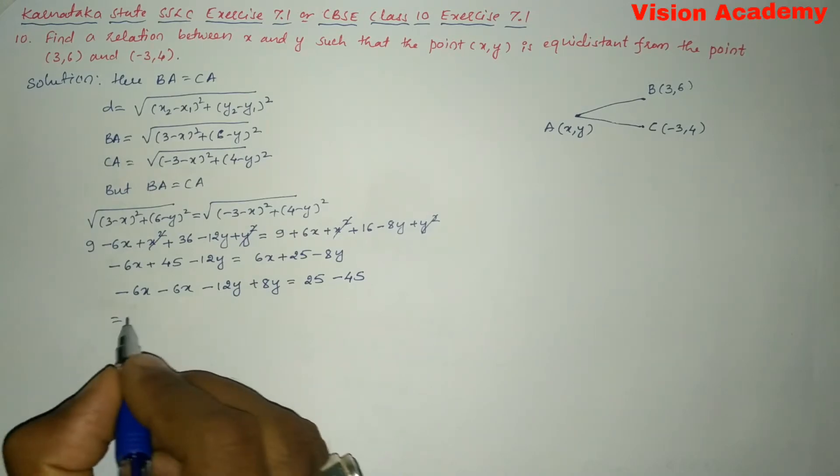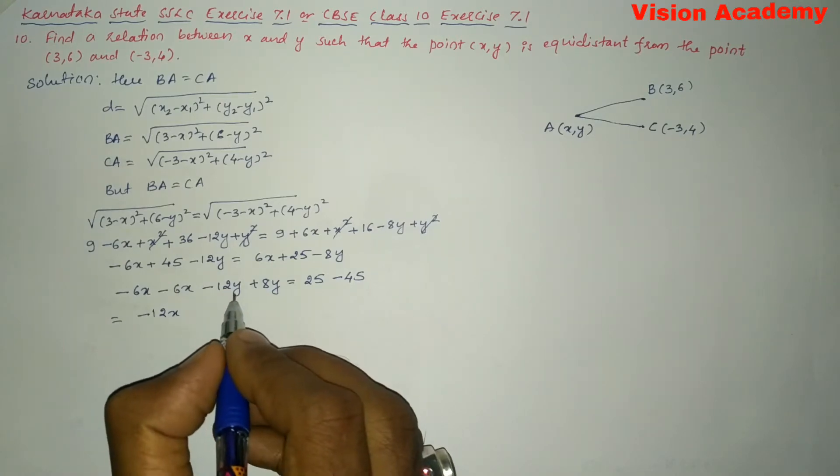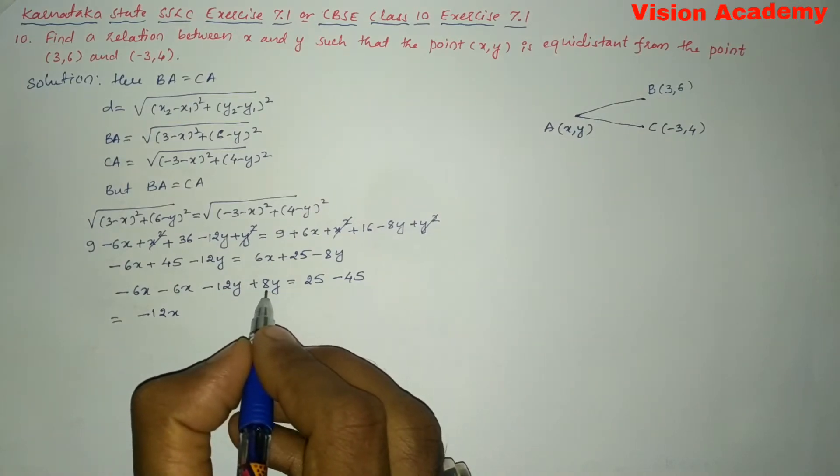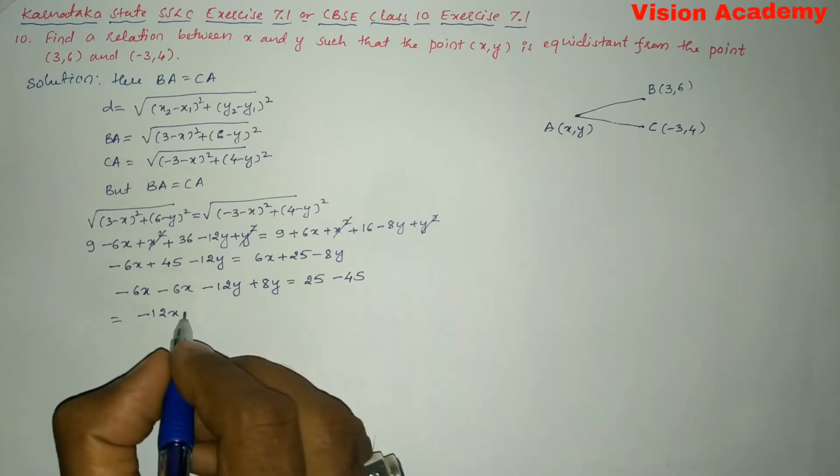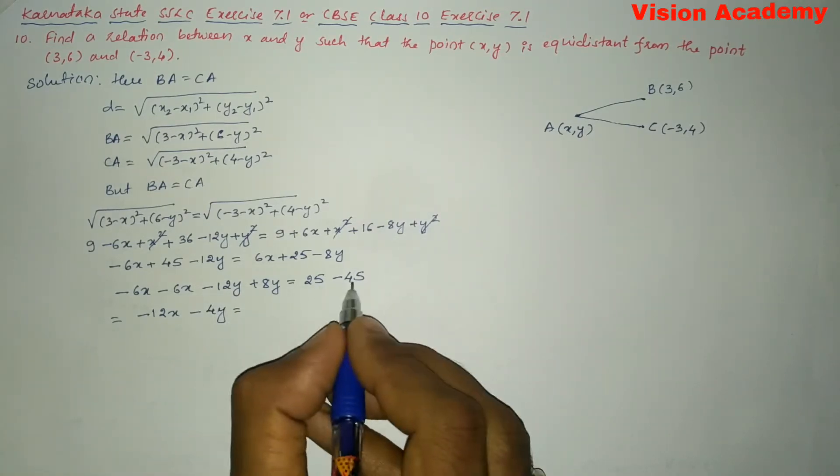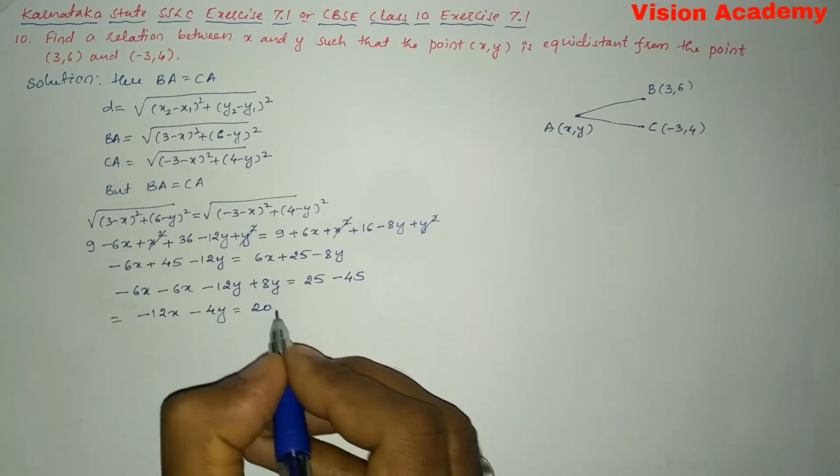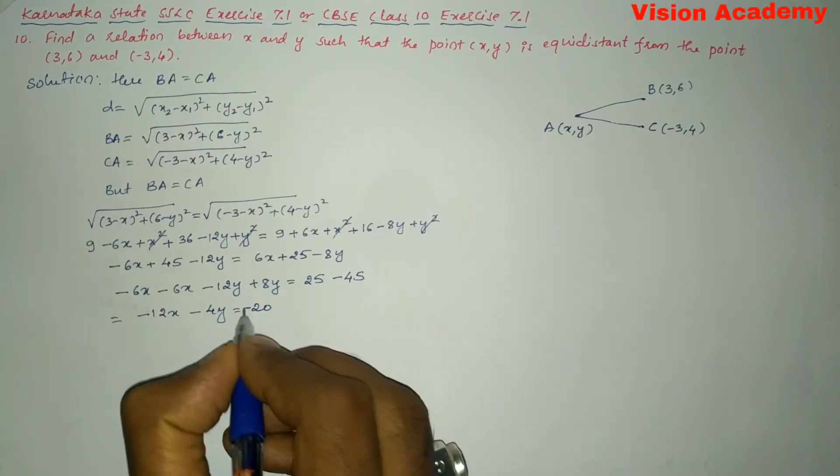Now, we will further simplify: -6X - 6X is -12X. Next, -12Y + 8Y gives us -4Y is equal to 25 - 45, which gives us -20.